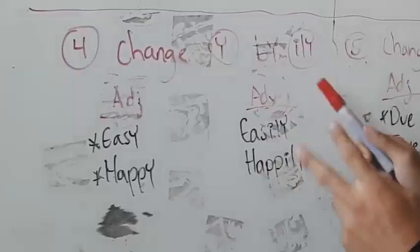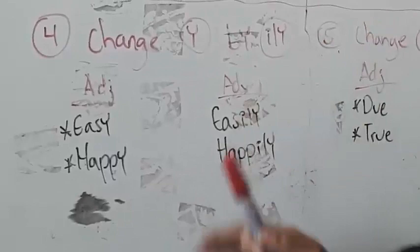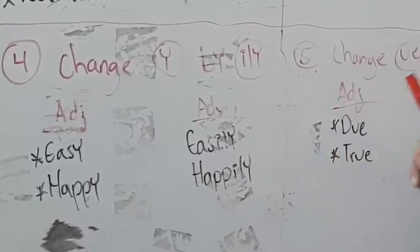The fourth rule that we have is to change -y to -ily. For example, the adjective 'easy' changes to 'easily.' 'Happy' becomes 'happily.'